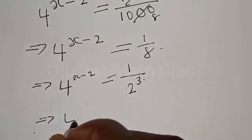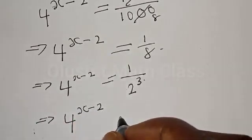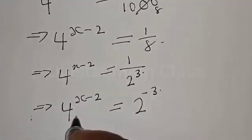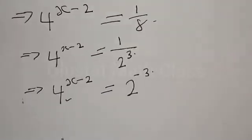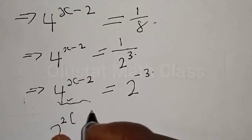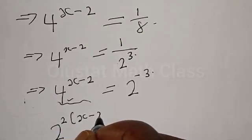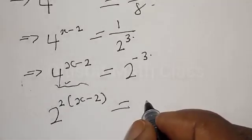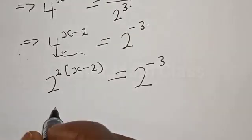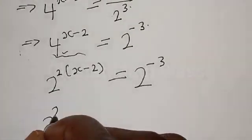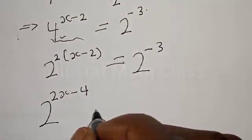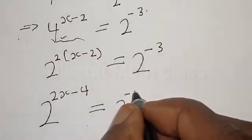We have 4 raised to power x minus 2 is equal to 2 raised to power minus 3. For the left hand side, 4 can be expressed as 2 raised to power 2, so we have 2 raised to power 2 times (x minus 2) is equal to 2 raised to power minus 3. Opening the bracket: 2 raised to power 2x minus 4 is equal to 2 raised to power minus 3.